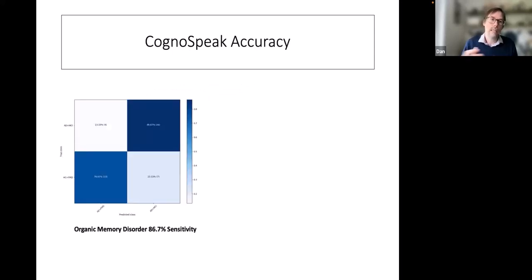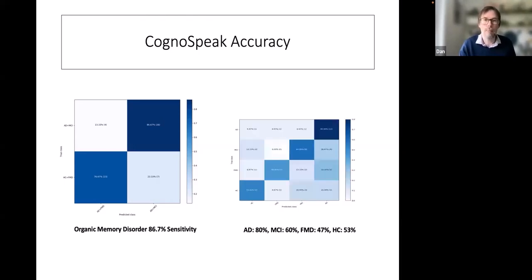And we could detect accurately, this is a sort of confusion matrix. So those people with Alzheimer's disease and MCI, we detected it, using the fully automatic system with 86.7% accuracy or sensitivity. And we actually predicted those with healthy controls and functional cognitive disorder about 76%, which is pretty similar to sort of pen and paper tests. And obviously, one of the main advantages, this requires no clinician time.